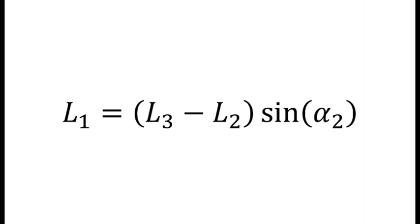Finally, L1, the offset distance, can be found using this final equation: L1 is equal to L3 minus L2 times sine of alpha 2.